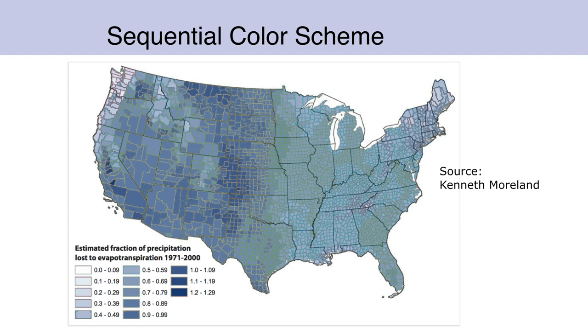And here it is in a sequential scheme, and you don't see that divide at all. The slight difference of color you see is quite a bit further west than the divide we saw before. And if you look there, you can see that the colors are sequential — we go from light to dark.